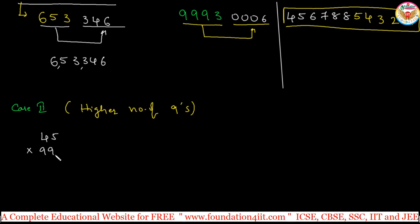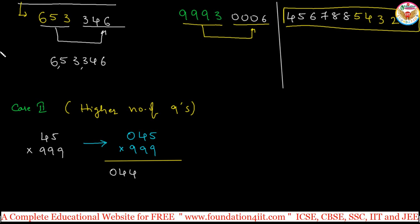Case 2 example: 45 multiplied by 999. Here the number of 9s is more than the digits in 45. We adjust the question by writing 45 as 045, so it has the same number of digits as the number of 9s. Now apply the same method: subtract 1 from 045 to get 044. Then subtract each digit from 9: 9 minus 0 is 9, 9 minus 4 is 5, 9 minus 4 is 5. Answer is 044955, which is 44955.